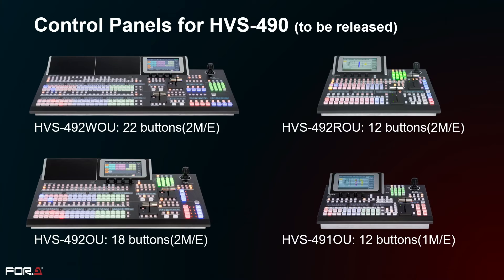In addition to the HVS 190 OU, there are four HVS 490 panels that can be connected. The two-row model can be used to control M/E in the first row and auxiliary in the second row.